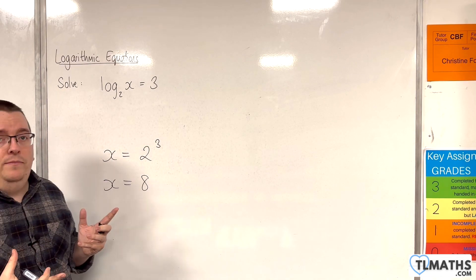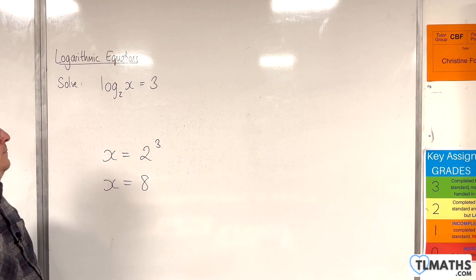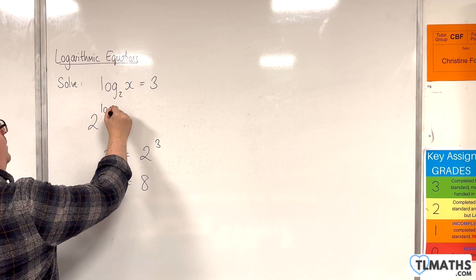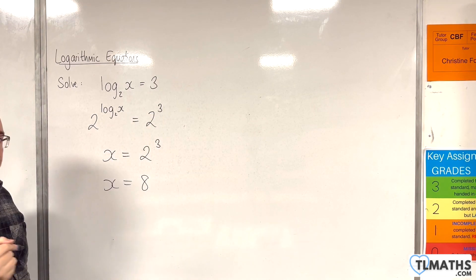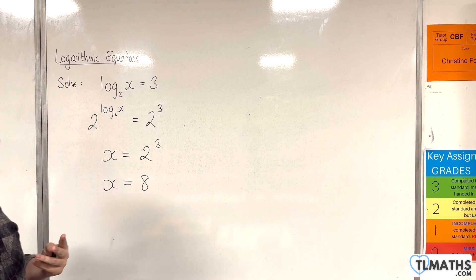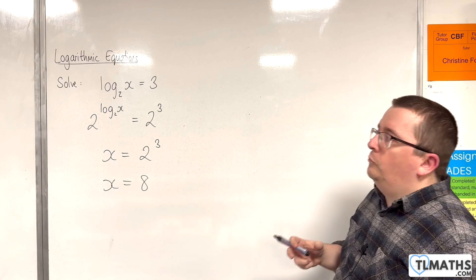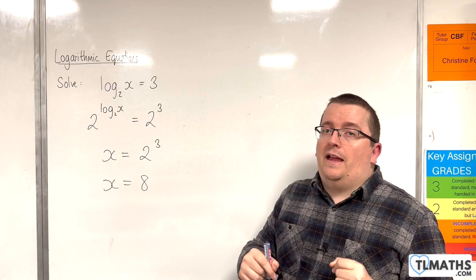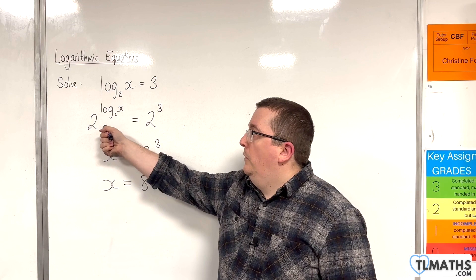Now behind the scenes, essentially I am doing 2 to the power of both sides. So I've got 2 to the power of log base 2 of x is equal to 2 to the power of 3. Now 2 to the power of log base 2 of x is just x, because 2 to the power of and log base 2 are inverse functions of one another, so they invert each other's processes. Just like log base 2 of 2 to the x is just equal to x, in the same way that must be equal to x.